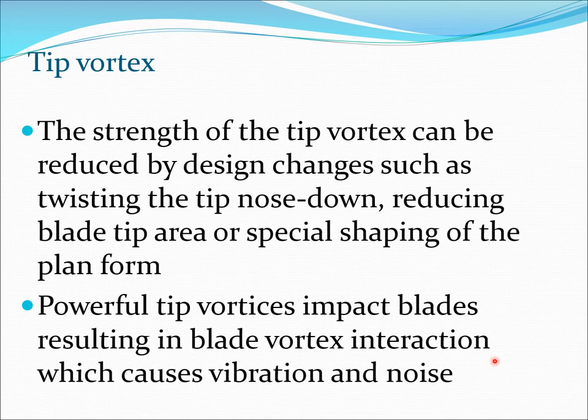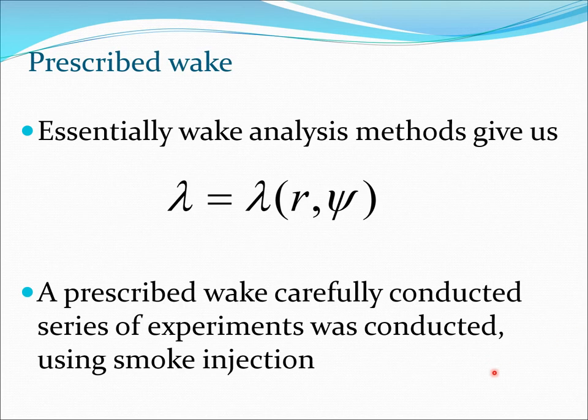To predict these facts you would require a good wake model. One of the models which has been around for some time is known as a prescribed wake model. In this you essentially prescribe this particular variation. You do a series of experiments using the smoke injection theory and then you develop this model λ = λ(r, ψ) and then you use this model in your computation or in your comprehensive code.